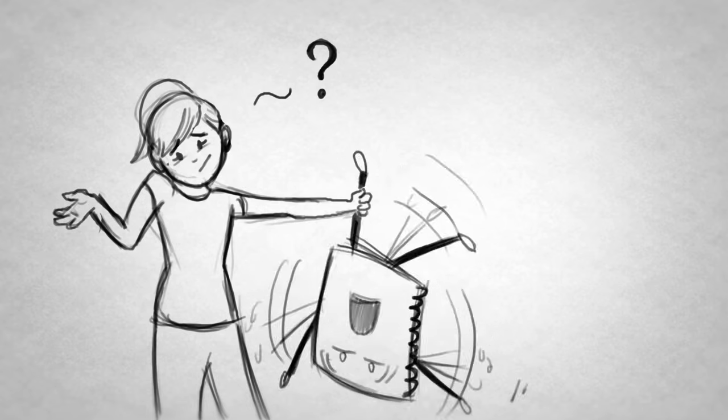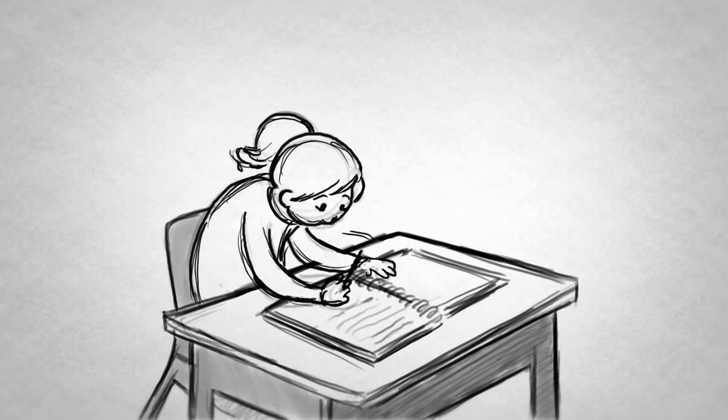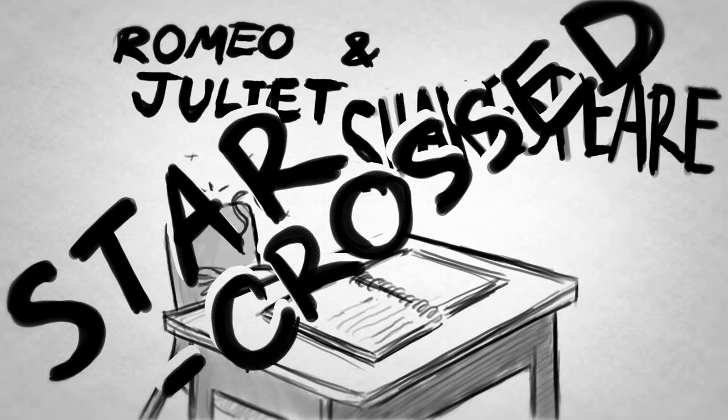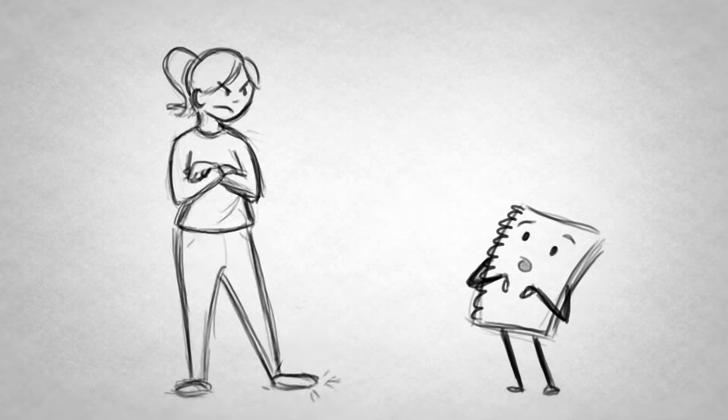But here's the thing. Most people don't know how to take notes. We're taught from a very young age that when a teacher starts delivering a load of information, for example, Shakespeare described Romeo and Julius love as star-crossed, that we should start writing down as much as what they're saying as possible. Well, this is an incredibly inefficient way to take notes.